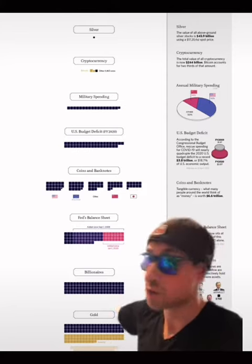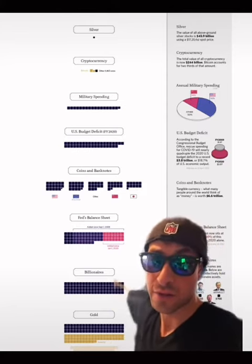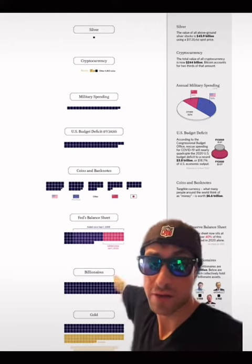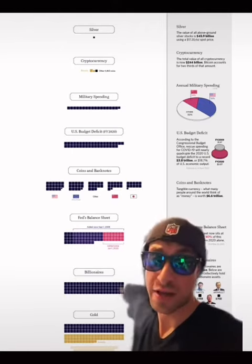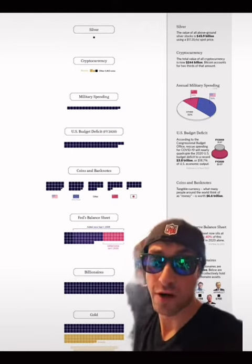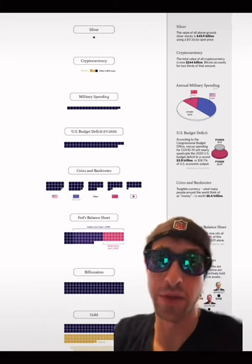We have this chart that shows all the value, money and markets in the world. So at the top, we got silver. And if you see, that's one little square. One little square is $100 billion worth.